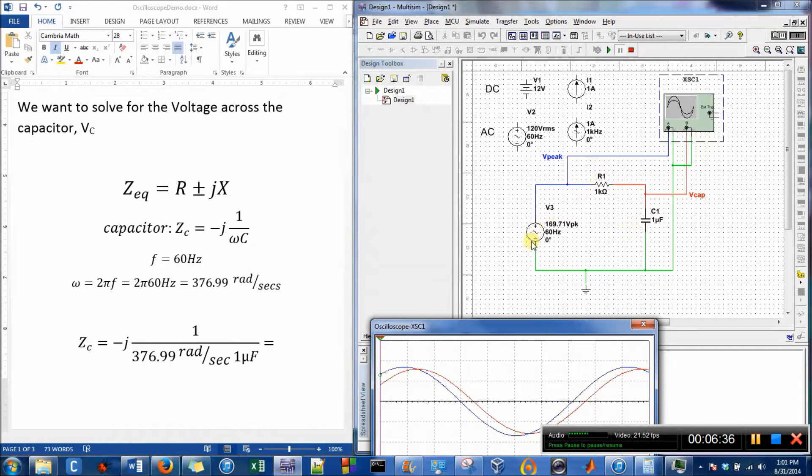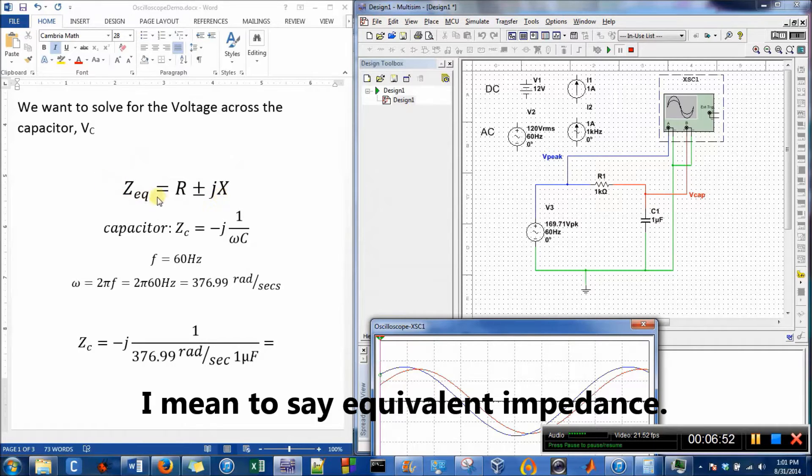Because these two components are in series with the voltage supply, we can add the resistance of the resistor and calculate the reactance of the capacitor to find the equivalent voltage. I have the equation here. This is the capacitance.